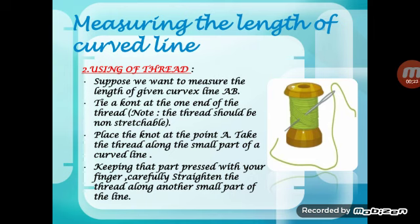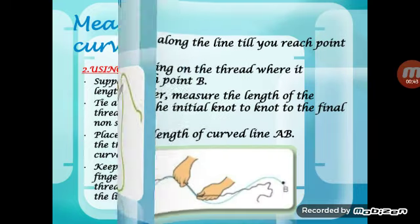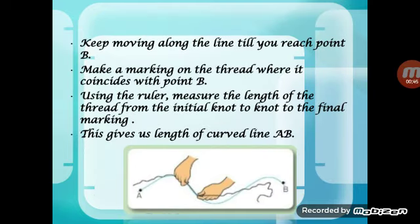Suppose you want to measure the length of a given curved line AB. Tie a knot at one end of the thread and place the knot at point A. Take the thread along a small part of the curved line, keeping that part pressed with your finger. Carefully move along the line until you reach point B, then make a marking on the thread where it coincides with point B.